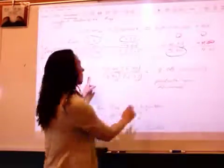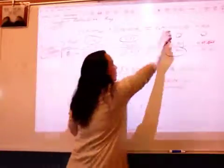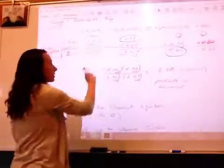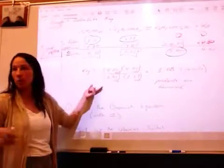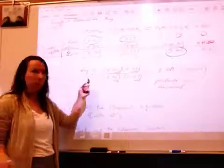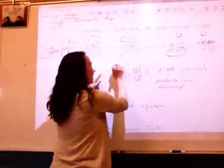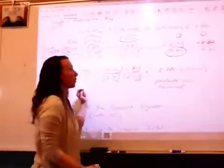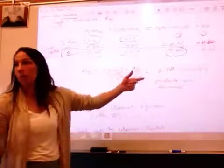And so now I can take my equilibrium constant, which is products, right? Products divided by reactants. Everybody okay? Or do I need to write the expression with square brackets? Everybody know it? And so I can plug that in, and plug that in to my products. And if it had to be squared, I would square it, right?